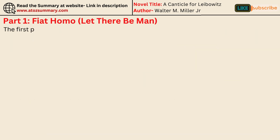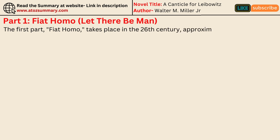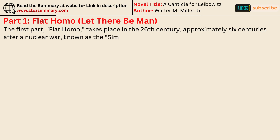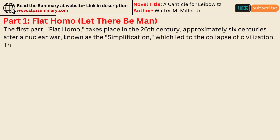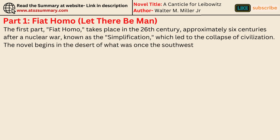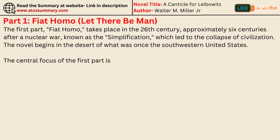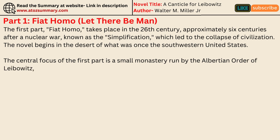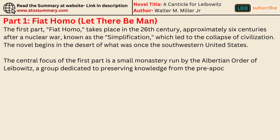The first part, Fiat Homo, takes place in the 26th century, approximately six centuries after a nuclear war known as the Simplification, which led to the collapse of civilization. The novel begins in the desert of what was once the southwestern United States. The central focus of the first part is a small monastery run by the Albertian Order of Leibowitz, a group dedicated to preserving knowledge from the pre-apocalyptic world.